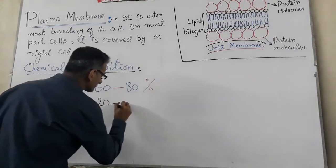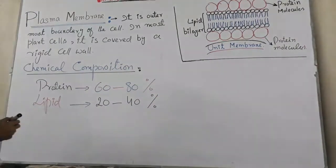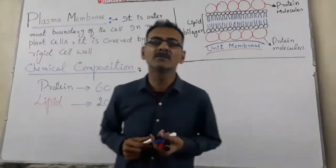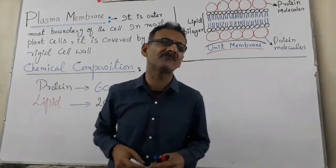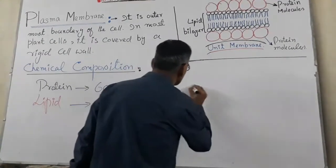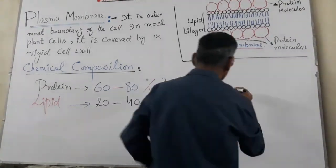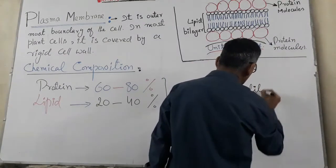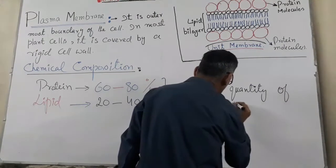The chemical composition is 20 to 40% for lipids. Small quantities of carbohydrates are also present. This is the chemical composition of the plasma membrane.